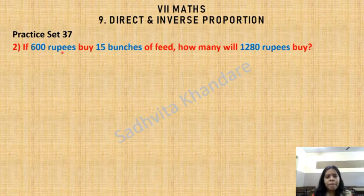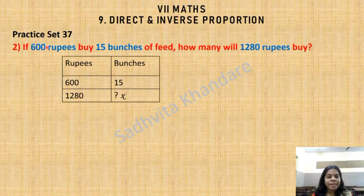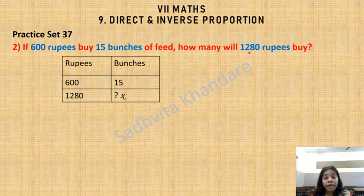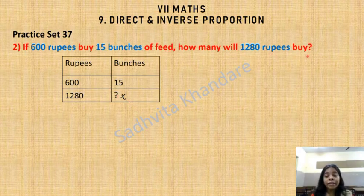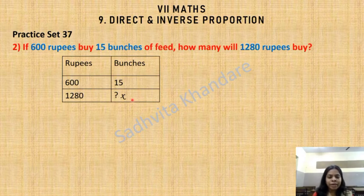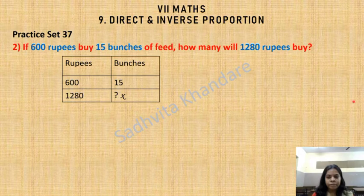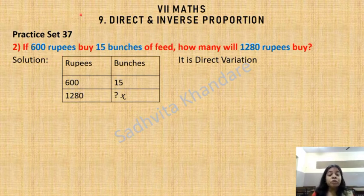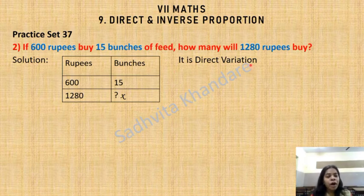Question 2: If 600 rupees buy 15 bunches of feed, how many bunches will 1280 rupees buy? We make a table: 600 rupees — 15 bunches; 1280 rupees — x bunches. When rupees increase, bunches also increase, so this is direct variation and we will use cross multiplication.